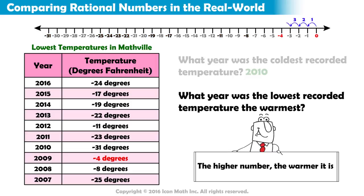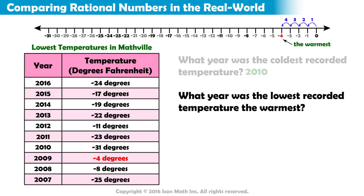Negative 4 degrees is only 4 places to the left of 0. Among the recorded temperatures in the table, do you see any temperatures greater than negative 4? Negative 4 is the warmest temperature listed. That means in 2009, Mathville's coldest recorded temperature was still warmer than the other years.